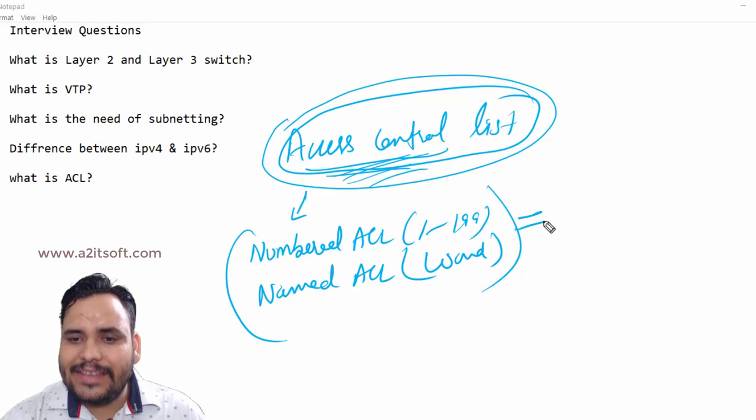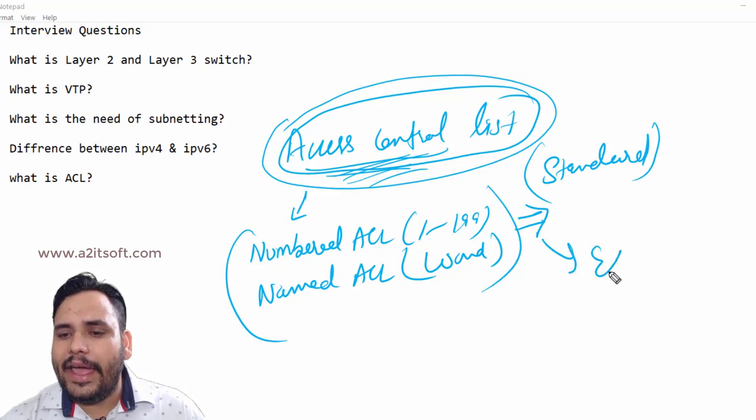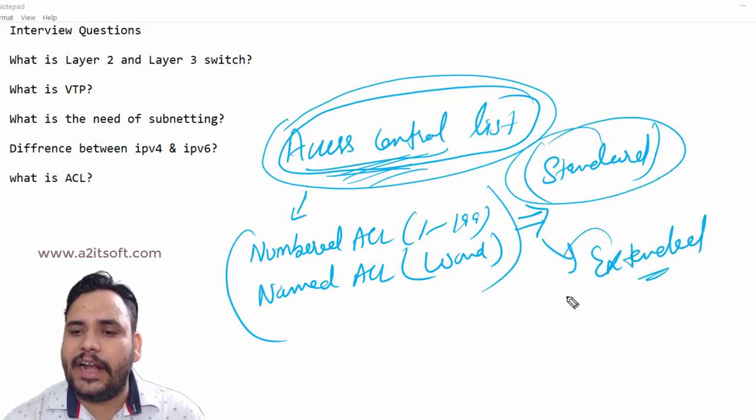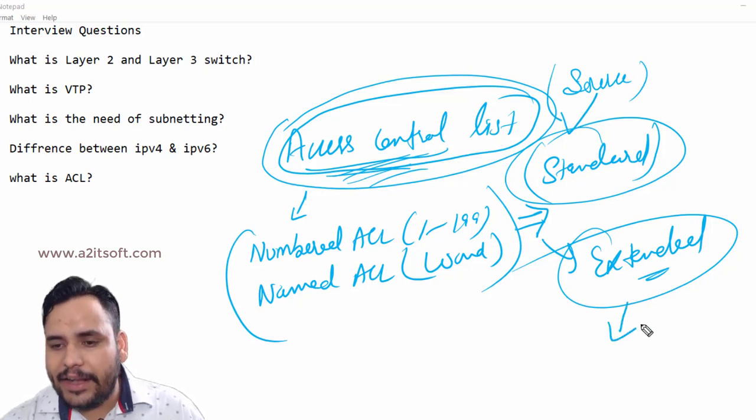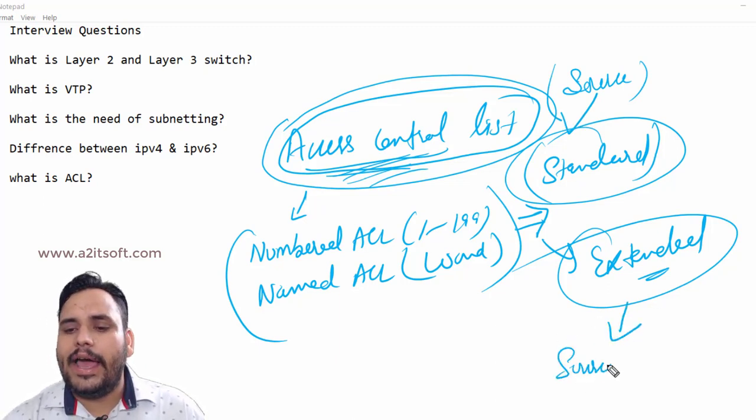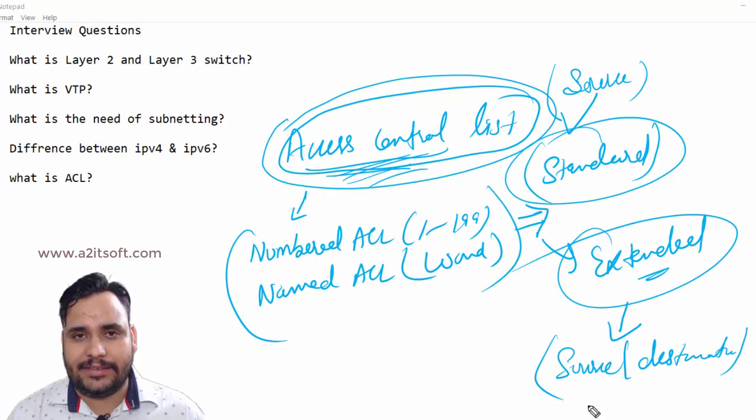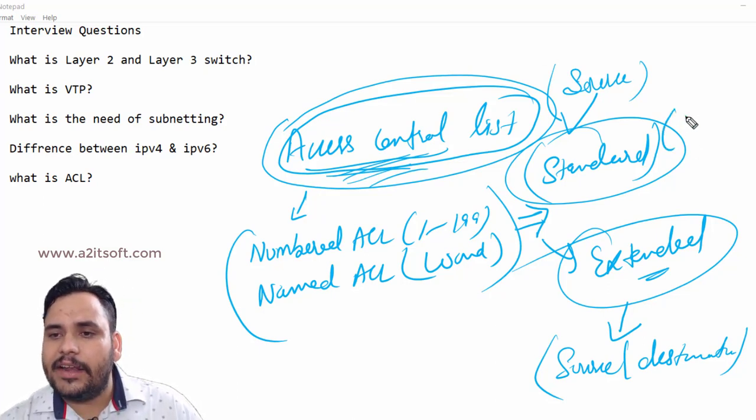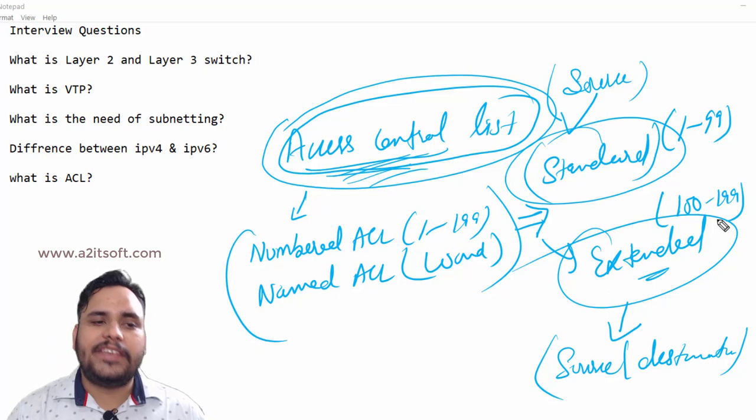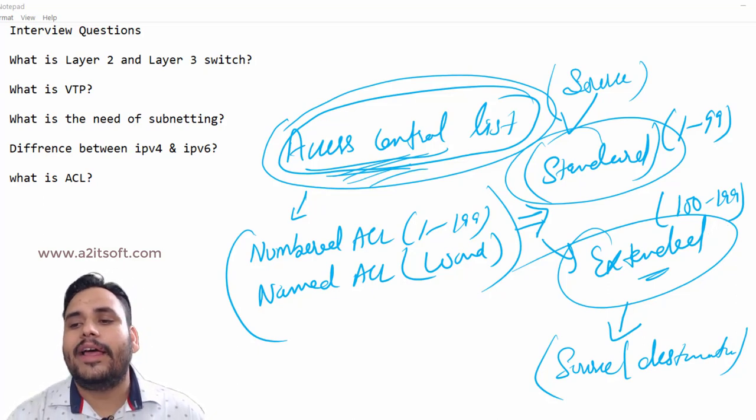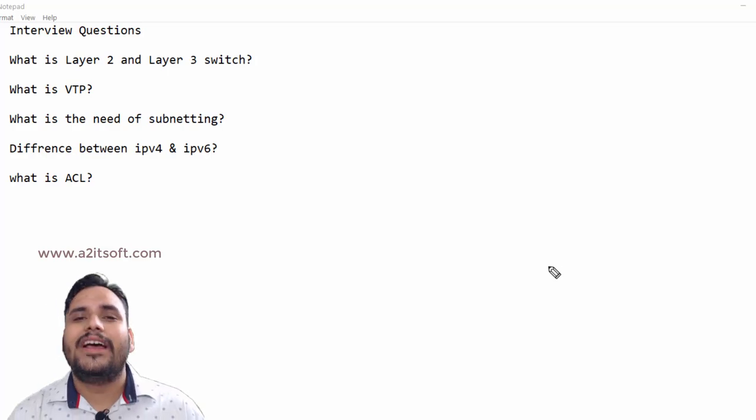Further, these access lists are divided into two parts: standard ACL and extended ACL. The difference is - standard ACL uses only source address for any condition test, but extended access list uses source as well as destination. If you want to block source to destination, you can use extended ACL. In standard ACL, the number range is 1-99, 1300-1999, and in extended 100-199. Basically, ACL is used to block or permit your network. These are the interview questions. In our next video we will discuss more interview questions. Thank you so much.